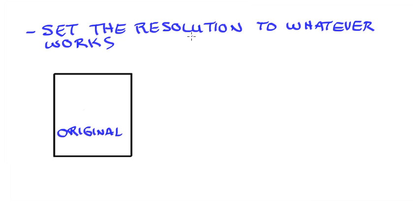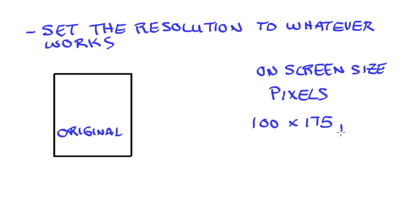On-screen sizes are always measured in pixels. So we need to know what size I want this to be on-screen. Is it going to be 100 by 175 pixels? Is it going to be 1000 by 1750 pixels? Is it going to be something else? The resolution at which we scan this will determine what size our finished piece will be.